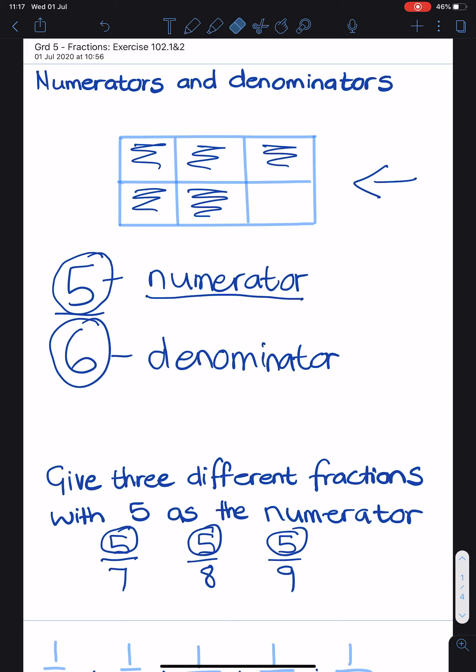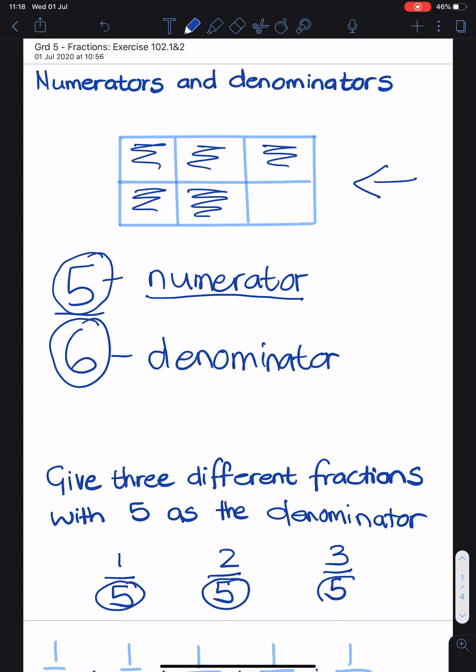Let's change the question to denominators. Give 3 different fractions with 5 as the denominator. So the denominator is at the bottom of a fraction. So I can put different numbers on the top. And I have got 3 different fractions with 5 as the denominator. Easy peasy.